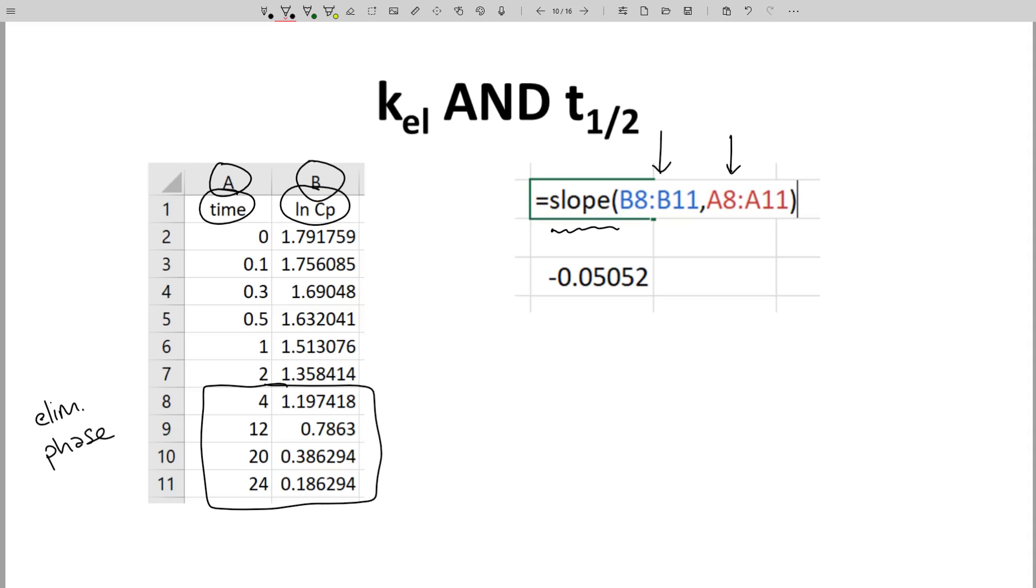In this case, the slope of our line is minus 0.051, so KEL is approximately plus 0.051 with units of inverse time, 1 over hours.